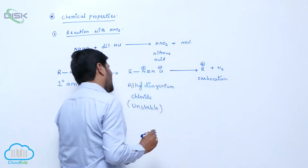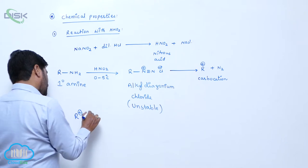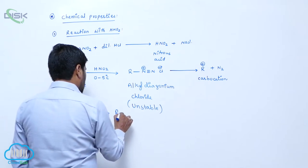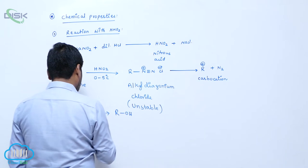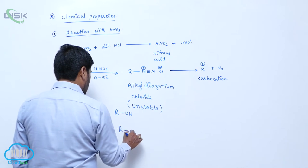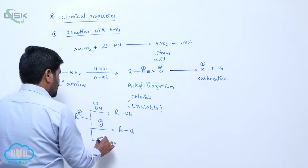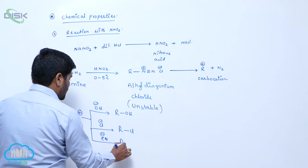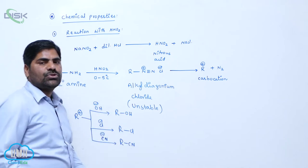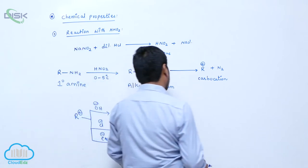This carbocation may react with a nucleophile like OH- and converts into R-OH. It also reacts with Cl- to form R-Cl, and with CN- to form R-CN. So the alkyl group may convert into alcohol, alkyl chloride, and alkyl cyanide.